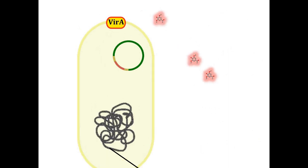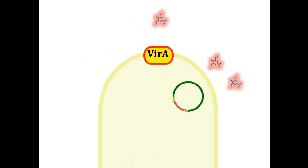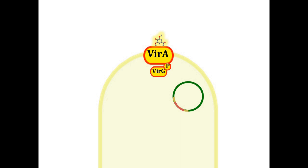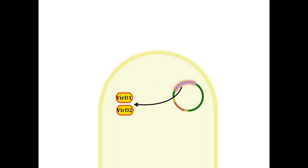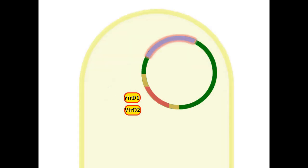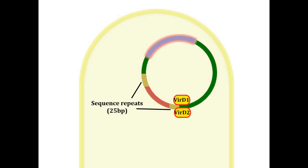The binding activates VIR-A protein, which in turn activates another protein called VIR-G through phosphorylation. A number of genes called VIR genes are located on the Ti plasmid, out of which the genes coding VIR-A and VIR-G are turned on all the time. The expression of other VIR genes requires VIR-G as a transcriptional activator. The VIR-D proteins are endonucleases that cleave 25 base pair sequence repeats flanking T-DNA.